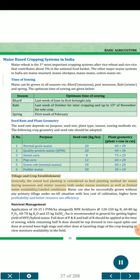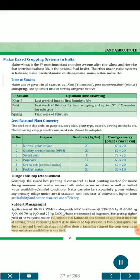Tillage and crop establishment: Raised bed planting is considered the best planting method for maize during monsoon and winter seasons, both under excess moisture and limited water availability. Maize can also be successfully grown without any primary tillage under no-till conditions with less cost of cultivation, higher farm profitability and better resource use efficiency. Nutrient management: Application of 10 to 15 t FYM/ha along with NPK fertilizer at 120-150 kg N, 60-80 kg P₂O₅, 60-70 kg K₂O, and 25 kg ZnSO₄ per hectare is recommended for higher yield of HYV/hybrid maize. Full dose of P and K and half of N should be applied at sowing, while remaining half N should be top-dressed in two equal splits — one at knee-high stage and other at tasseling stage.